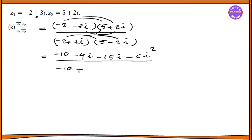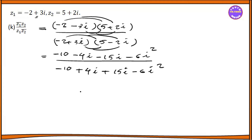Minus minus, more — plus 4i. Plus 15i. Minus 6i squared. Equal to. i squared minus 1. Minus 1. The constant minus 1. Minus 6. Plus 6.